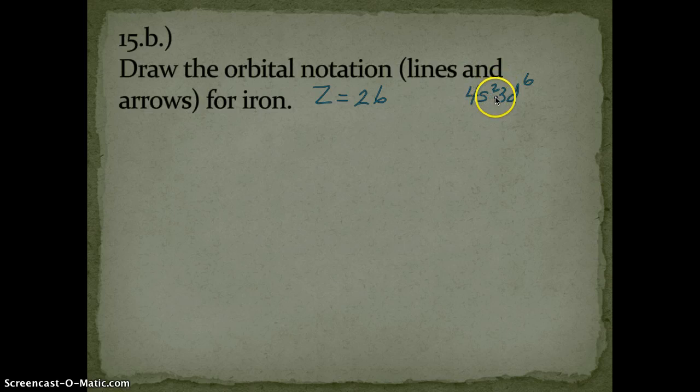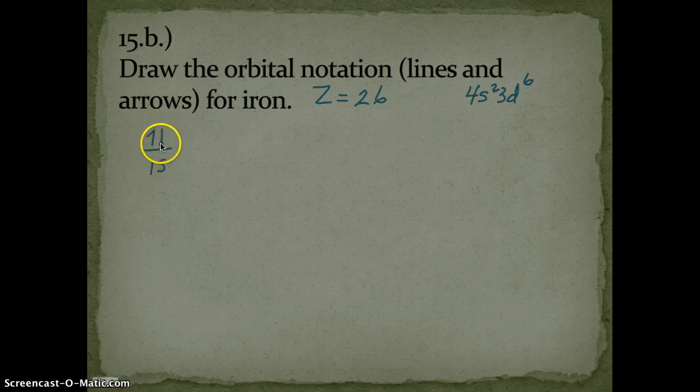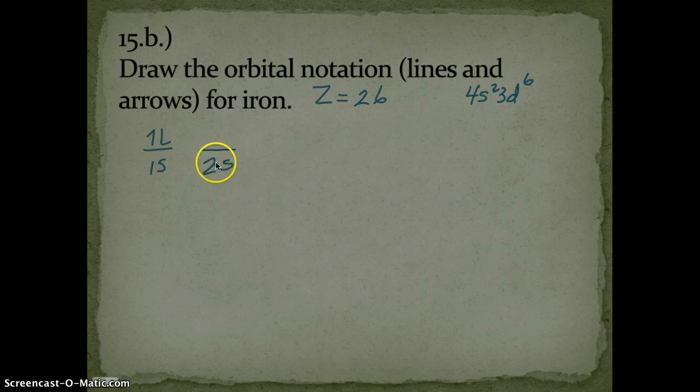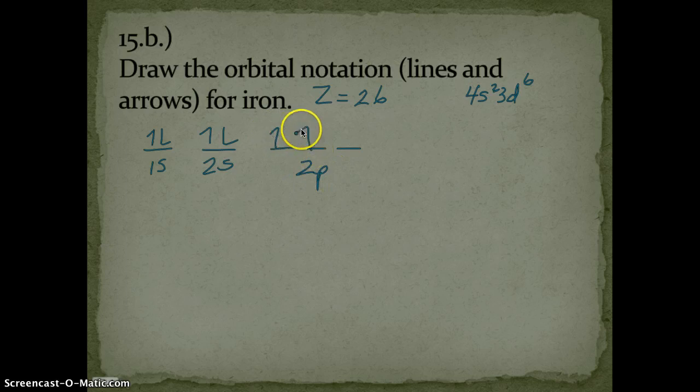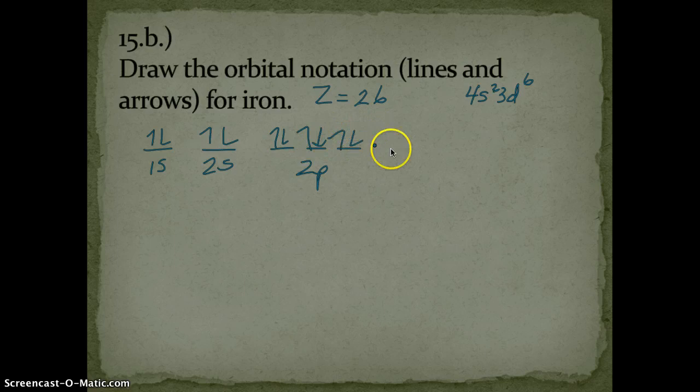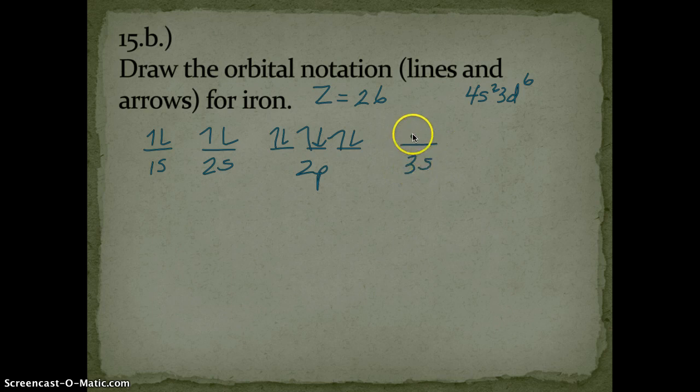1s: I have one orbital in my 1s sublevel, two electrons. 2s: same thing, it's still an s sublevel. 2p: remember our filling order—again, this is Hund's rule—these electrons go to separate orbitals within the same sublevel before they double up.